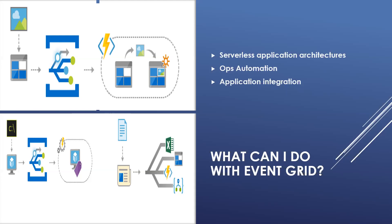The second use case is Ops automation. Event Grid allows you to speed automation and simplify policy enforcement. For example, use Event Grid to notify Azure Automation when a virtual machine or SQL database is created. Use the events to automatically check that service configurations are compliant, put metadata into operations tools, tag virtual machines, or file work items.